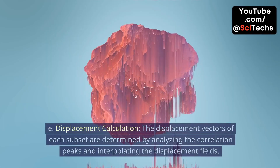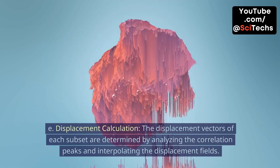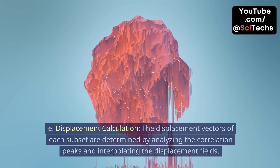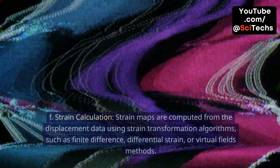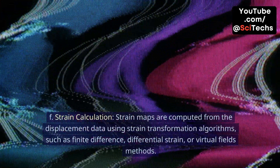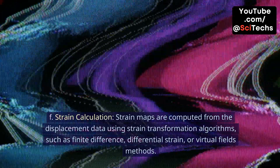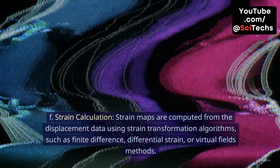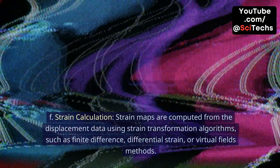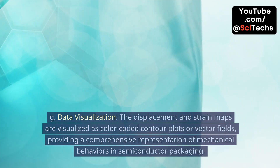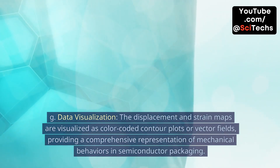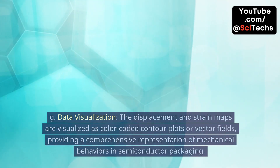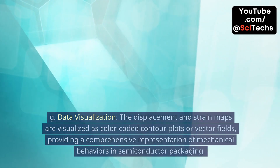E. Displacement Calculation: The displacement vectors of each subset are determined by analyzing the correlation peaks and interpolating the displacement fields. F. Strain Calculation: Strain maps are computed from the displacement data using strain transformation algorithms, such as finite difference, differential strain, or virtual fields methods. G. Data Visualization: The displacement and strain maps are visualized as color-coded contour plots or vector fields, providing a comprehensive representation of mechanical behaviors in semiconductor packaging.